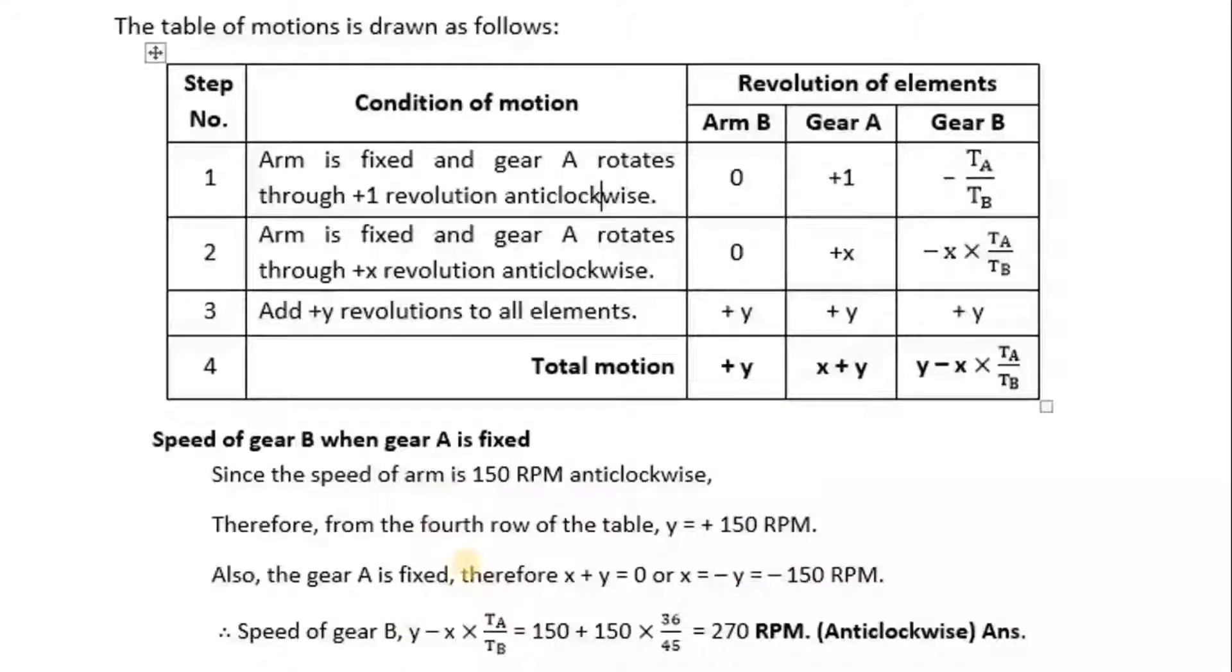So with this what we can say is the speed of gear B will be y - x × TA/TB. So y is +150, minus of x is -150, so minus of minus 150 becomes +150. TA is 36, TB is 45, so substitute it comes to 270 RPM anticlockwise and that is our answer.